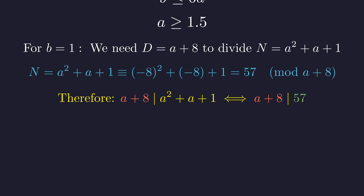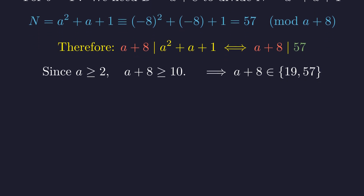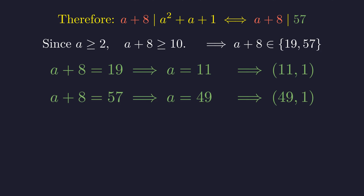The divisors of 57 are 1, 3, 19, and 57. Since a is at least 2, a plus 8 is at least 10, eliminating 1 and 3, leaving 19 and 57. If a plus 8 equals 19, then a equals 11, giving candidate pair (11, 1). We verify: the divisor is 19 and the dividend is 133. Since 19 times 7 is 133, the pair is valid. If a plus 8 equals 57, then a equals 49, giving candidate pair (49, 1). We verify: the divisor is 57 and the dividend is 2451. Since 57 times 43 is 2451, this pair is also a valid solution.